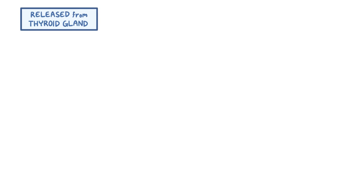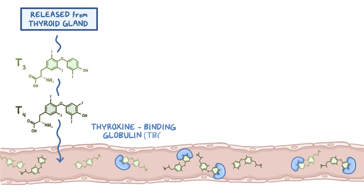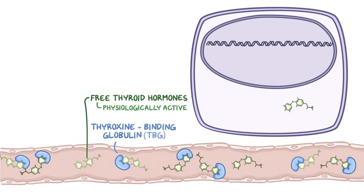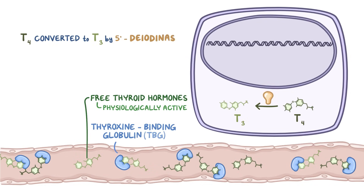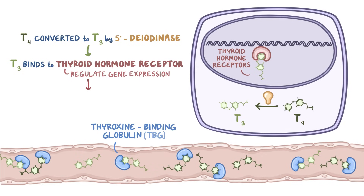Once released from the thyroid gland, most of the T3 and T4 travels via the blood by binding with the thyroxine-binding globulin, or TBG, to reach the target cell. Alternatively, small amounts of T3 and T4 stay unbound and are referred to as free thyroid hormones. Only free thyroid hormones are physiologically active because they are able to enter the cell. Once inside the cell, T4 is mostly converted into T3 by the enzyme 5-diiodinase. T3 binds to thyroid hormone receptors within the cell's nucleus, and these receptors regulate gene expression, which ultimately leads to various metabolic and physiologic effects in the body.